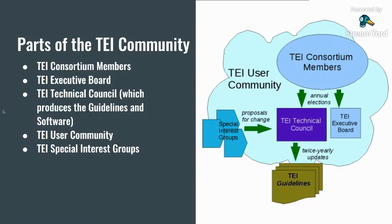The TEI community consists of many different parts: a consortium with members who pay yearly dues, an executive committee, and a technical council that works on technical issues ranging from writing the TEI guidelines to creating style sheets and software. There's a user community that offers feedback based on their own projects, and people who offer feedback often create special interest groups. For example, people working on medieval manuscripts created a manuscript description special interest group, and those working on letters created a correspondence special interest group, both leading to improved TEI guidelines.